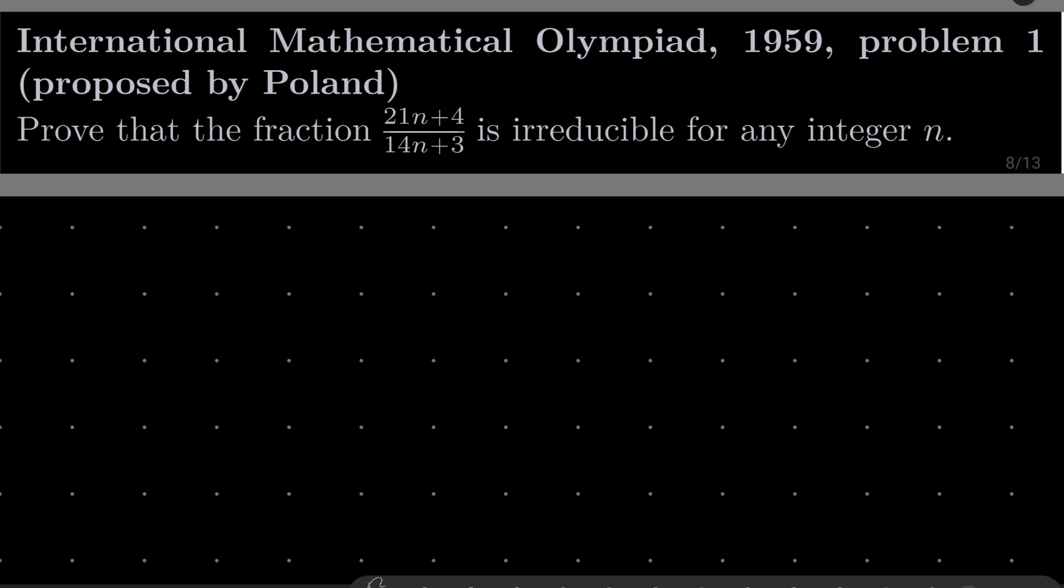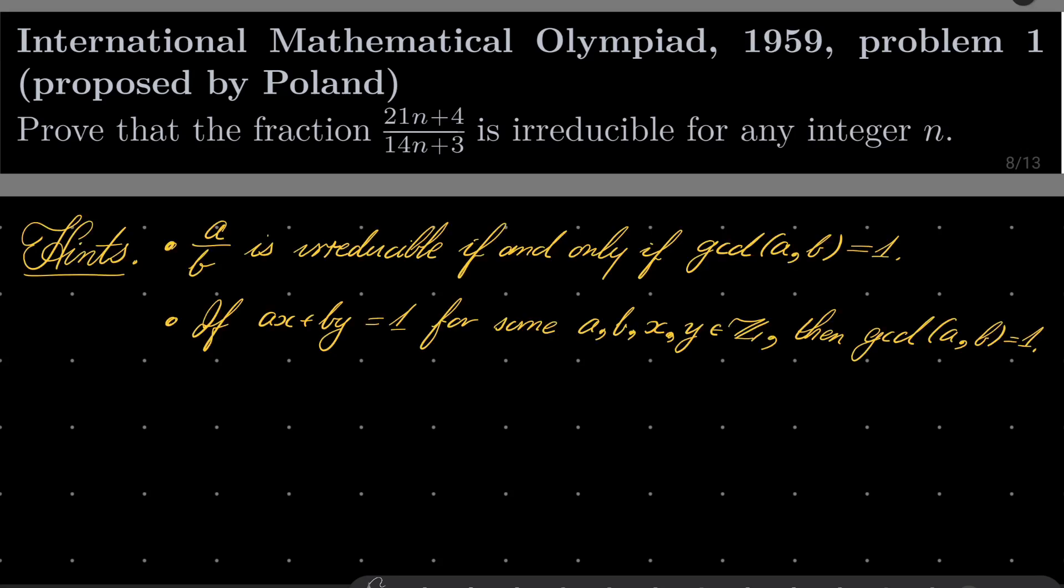This problem is very easy. Here are my hints. If we have two integers a and b, the fraction a over b is irreducible if and only if these numbers are co-prime, so gcd of a and b is 1.